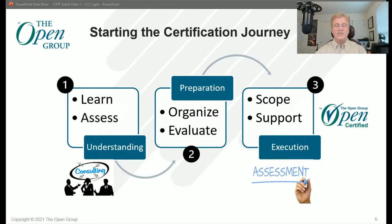Once the internal organization assessment has determined you're ready, it's time to prepare for certification. Preparation is essential for a successful assessment. Your company will need to empower individuals who are able to gather and manage the certification documentation and support the assessor as they complete their evaluation. Most importantly, your organization will define a certification scope and document how controls and practices are applied to mitigate risks to your technology supply chain. Then you work with and support the recognized assessor as they review the evidence and potentially request additional supporting documentation that meets the claims of your scope.